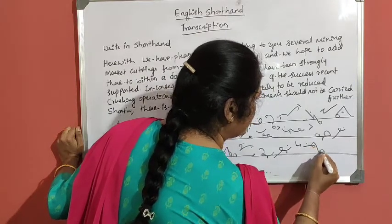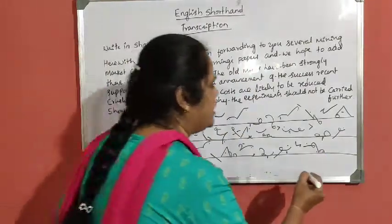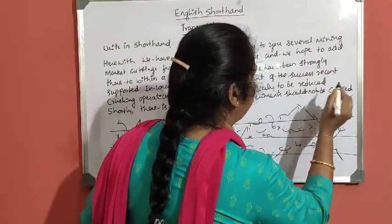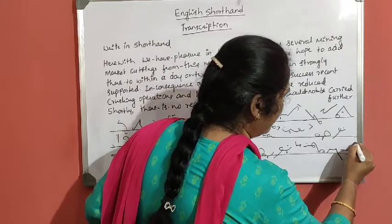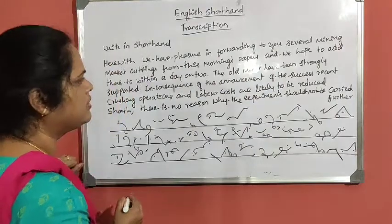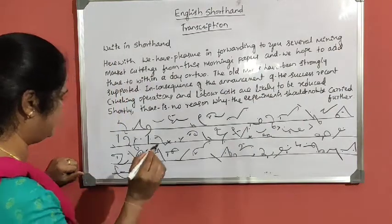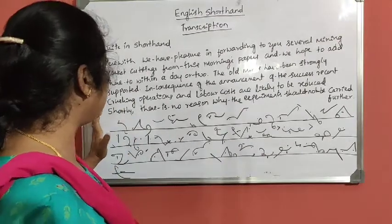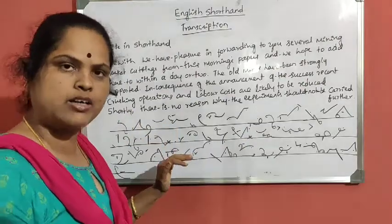It is the experiments: K circle is per, young is hall for N hook — experiments. Then 'should not be carried forward' — 'should not be' together — should not be. Carried: K circle X, K R D — carried, K R D. Carried further: FUR is doubled — this is further.